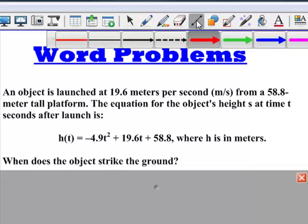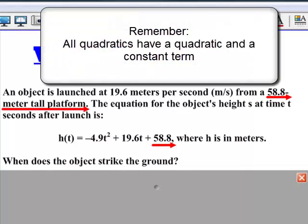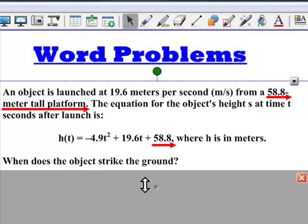One important thing to note here: the number in the quadratic that has no variable attached to it is the height of the platform. We often call this the constant term because it will not change. In questions where something is starting at a certain height or has a starting value, that's most likely going to be your constant term.